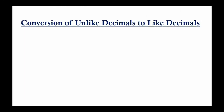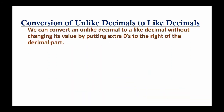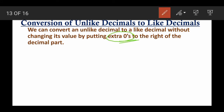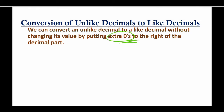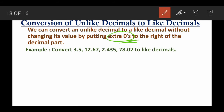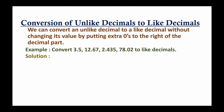Next, let's discuss conversion of unlike decimals to like decimals. We can convert an unlike decimal to a like decimal without changing its value. To do this, we add extra zeros to the right of the decimal part. For example, convert 3.5, 12.67, 2.435, and 78.02 to like decimals. All four numbers contain different numbers of decimal places, so we need to convert them to an equal number of decimal places.